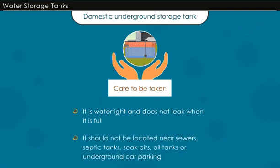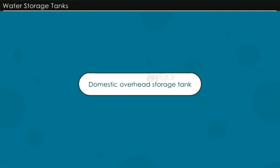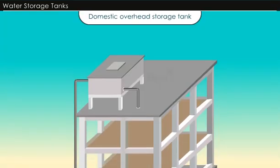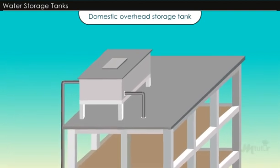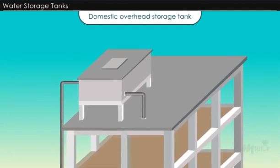The underground tank should not be located near sewers, septic tanks, soak pits, oil tanks, or underground car parking areas, to avoid seepage of contaminants. Domestic overhead storage tanks placed on the top of buildings should be properly located so as to safely transmit their loads to the beams and columns in the building.